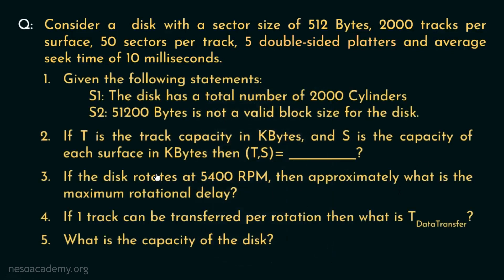Now let's move on to the first question. Given the following two statements, we need to find out which one is true or false. The first statement states the disk has a total number of 2000 cylinders — this is true, because there are 2000 tracks per surface, so there are 2000 cylinders as well.